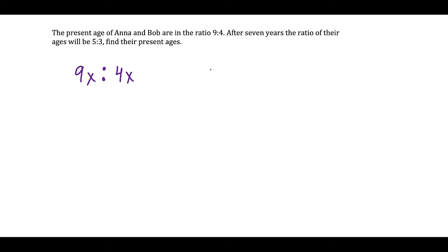What you want to think about is that Anna's age seven years later would be 9x plus 7 and Bob's age seven years later would be 4x plus 7. Because as seven years goes by, you just add seven to your age. If you think about what is your age right now, seven years later, just take your age and add seven and that's going to tell you how old you're going to be in seven years.